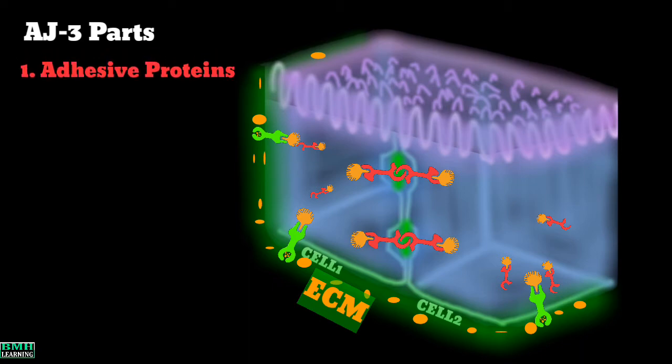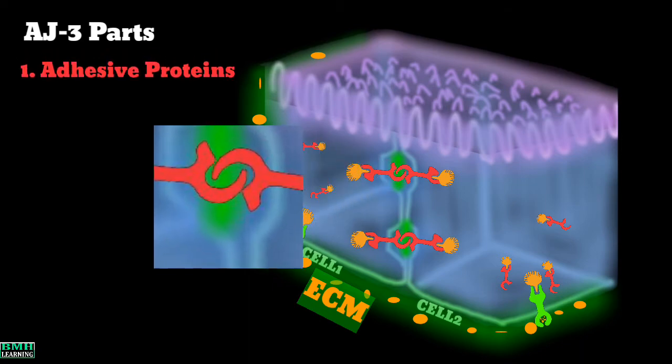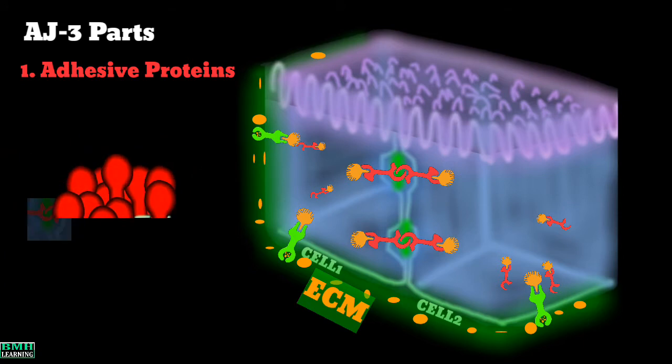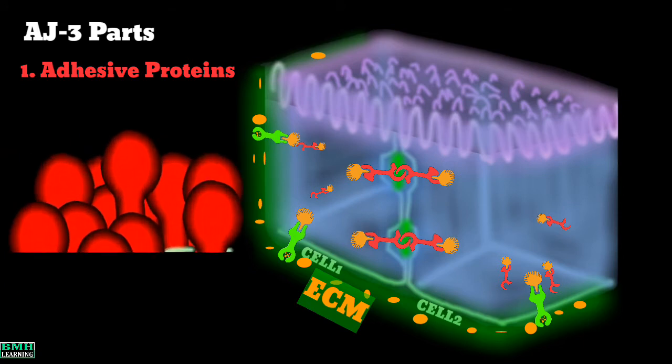First is the adhesive proteins. They are found here, that is in the exoplasmic portion of the junction. So if we zoom this head part of the junction, we find it's formed of numerous clusters of proteins which we call adhesive proteins.